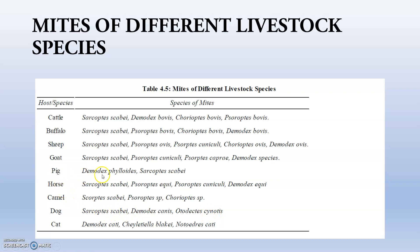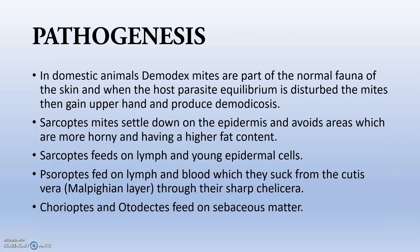For pigs, Demodex phylloides is very important. In dogs, Sarcoptes, Psoroptes, and Demodex are all present. So microscopic examination should be very accurate whenever we are differentiating them.